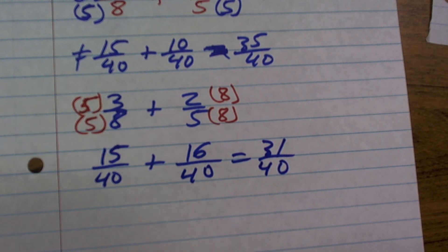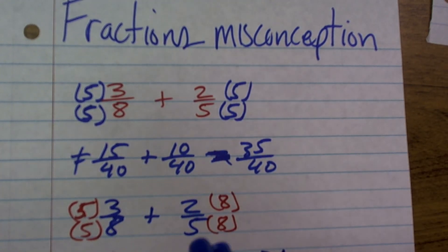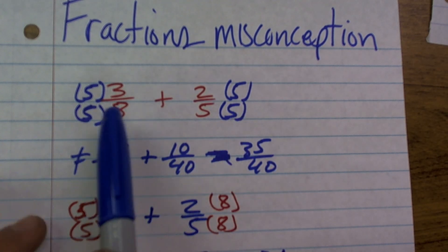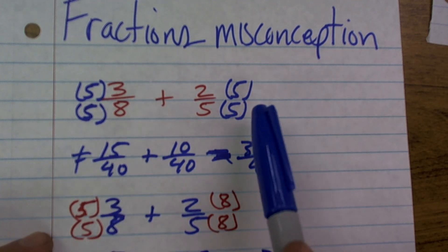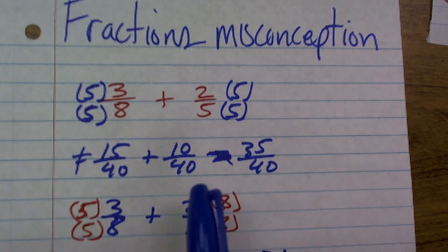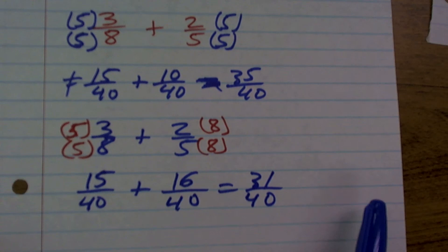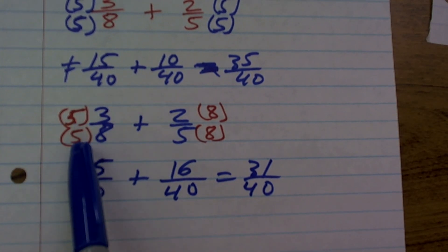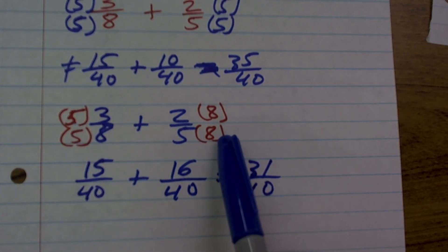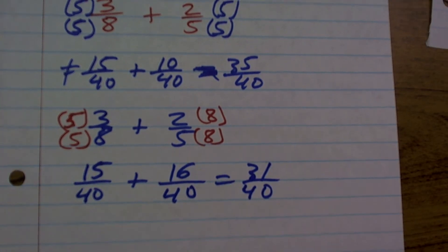It's just a little mistake I've noticed a lot of students making. They find the common multiple and know what it is, but then they get lazy and write the same number they multiplied the first fraction by for the second one too — and that gives you an incorrect answer. The correct approach: multiply by 5 over 5 on the left fraction and 8 over 8 on the right fraction, add them together, and you get the correct answer.